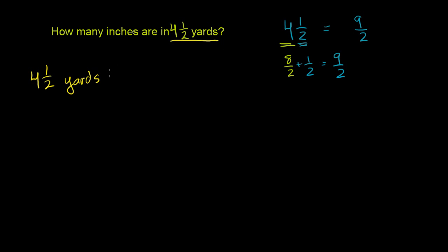So 4 and 1 half yards is the same thing as 9 over 2 yards. Now, we want to convert this into inches. Now, just so we can take this in baby steps, maybe we'd convert this into feet first. And then once we have it in feet, then we can convert it into inches.